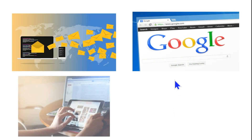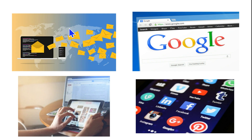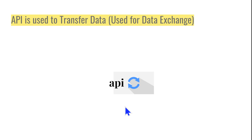Actually, you are using API on an everyday basis — unknowingly. For example, when you type something on Google, when you open a web page like Facebook, when you are sending or receiving an email, when you are opening any application on your phone or laptop — every day, knowingly or unknowingly, you are using APIs.